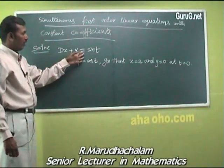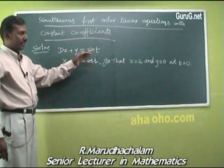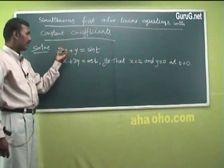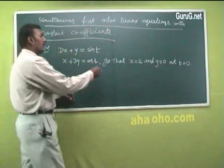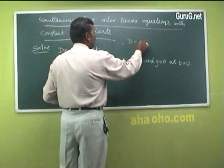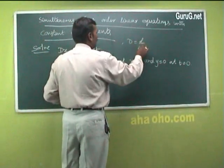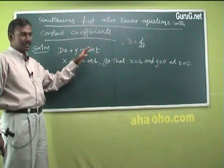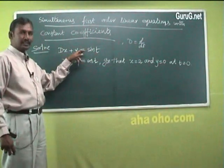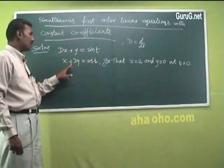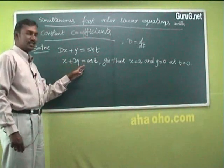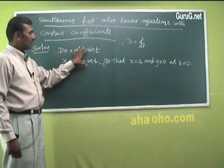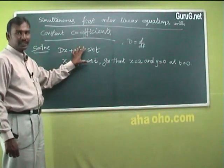For example, dx plus y equal to sine t. It is a differential equation — first-order. Here d is nothing but d by dt, so d by dt of x plus y equal to sine t. It is a first-order differential equation, and it is also a system of first-order linear differential equations.